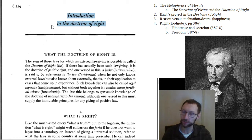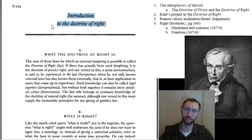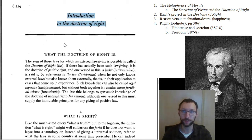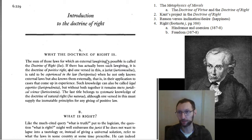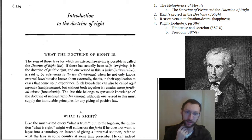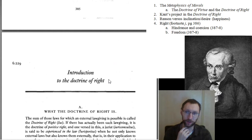The Doctrine of Virtue is about virtue — how to be a good person, moral virtue — unrelated to this course. We're looking at Kant's political philosophy in this course, not his moral philosophy. The Doctrine of Right is the political philosophy part of this book, so what exactly is the Doctrine of Right?